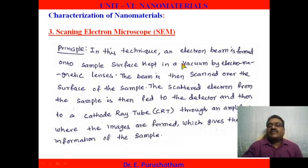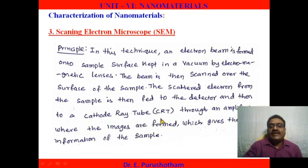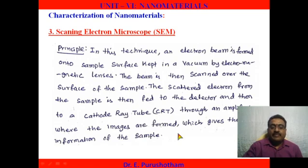In this technique, an electron beam is formed onto the sample surface kept in a vacuum by electromagnetic lenses. The beam is then scanned over the surface of the sample. The scattered electrons from the sample are fed to the detector and then to a cathode ray tube through an amplifier, where images are formed, which gives the information of the sample. This is the working principle of SEM.